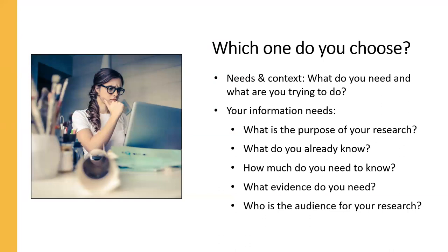So why would you choose one over the other? Between the library and the web, you have access to a ton of stuff — it depends on what you need and what you're trying to do. The types of information we need depend on the needs we're trying to meet and the context. For example, you would use different information for personal tasks like finding a new doctor or figuring out what phone to buy than for a research paper for class. Think about your information needs — identify all of the needs that you have, what and how much you need to answer your question or complete an assignment, and where you should look for it.